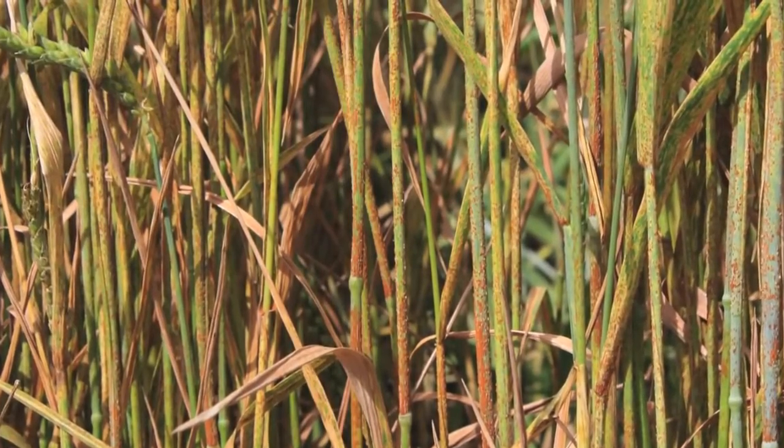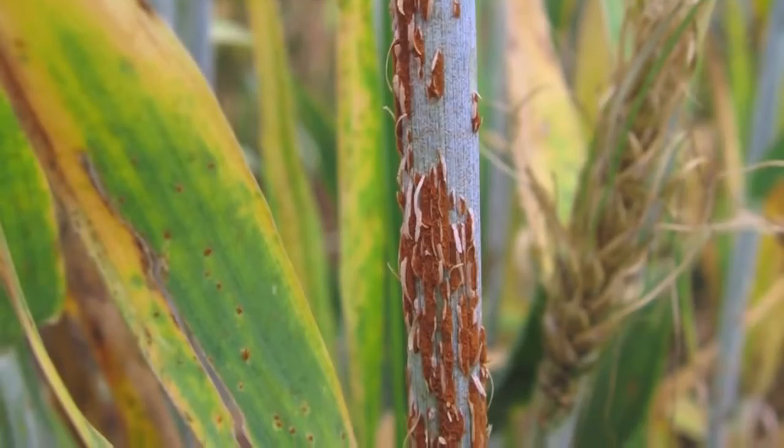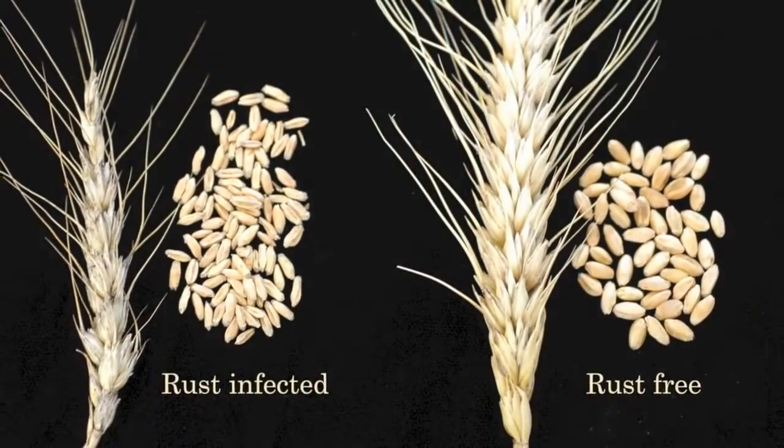Destroying harvests for millennia, the stem rust pathogen of wheat is a sophisticated organism that continues to this day to threaten the security of global wheat production.